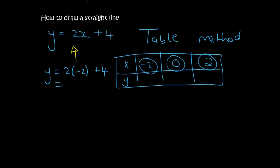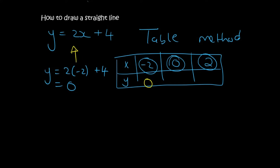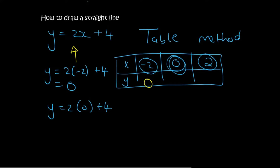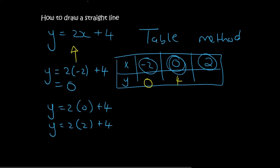If you typed this in on the calculator, you are going to end up with 0. So we just fill that in on the table. Then we move on to the next point. So x is now 0, so we say y equals to 2 bracket 0, plus 4, and that would give you a y value of 4. You then plug in 2, so that would be y equals to 2 times 2 plus 4, and that's going to give you a y value of 8.